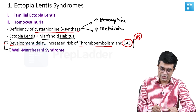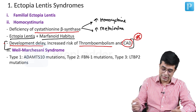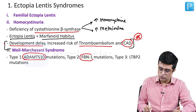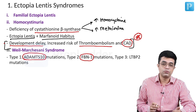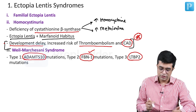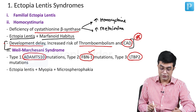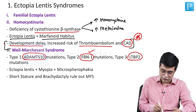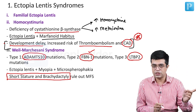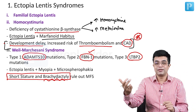The third ectopia lentis syndrome is Weill-Marchesani syndrome. There are three types: Type 1 is due to ADAMTS10 mutation, Type 2 tends to mimic Marfan syndrome and is due to FBN gene mutation, and Type 3 is due to LTBP2 gene mutations. In Weill-Marchesani syndrome there will be ectopia lentis with myopia and microspherophakia. Additional findings which rule out Marfan syndrome are short stature and brachydactyly — short digits.